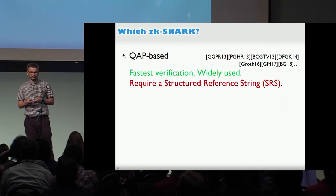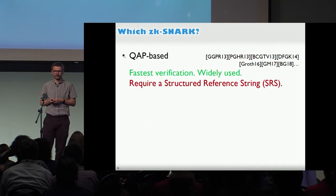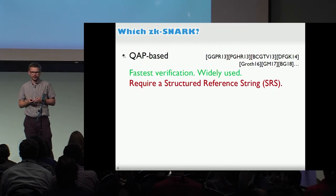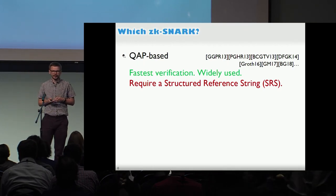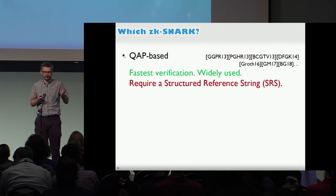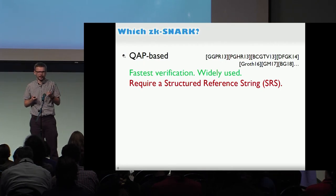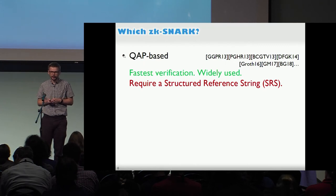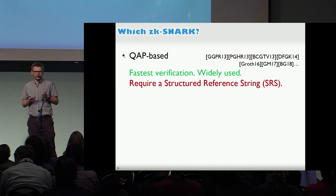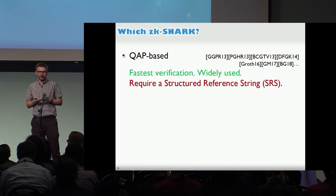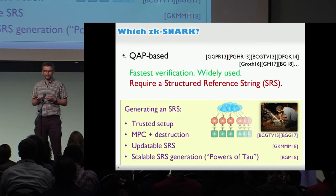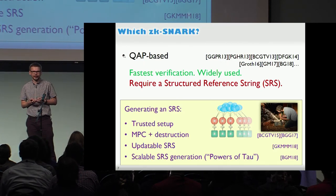But which SNARK should you use? The most efficient ones are based on quadratic arithmetic programs, and they have extremely fast verification - just milliseconds - but they require a common reference string, or using the new terminology from the workshop, a structured reference string (SRS). The soundness of the proof system crucially depends on the SRS being correctly generated and then the private randomness getting destroyed. So who should do this? You could delegate to someone whom you trust.